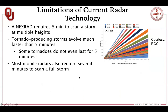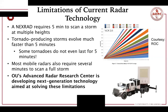One key limitation of current radar technology is that NEXRAD requires five minutes to scan a storm — the radar physically rotates around scanning at one height, then moves up to the next, covering different levels. Since some tornadoes don't even last five minutes, and tornado genesis may occur relatively quickly, it's really important to be able to scan faster. Many mobile radars also take several minutes to scan a full storm. The Advanced Radar Research Center at OU is developing next-generation technology aimed at solving some of these issues.